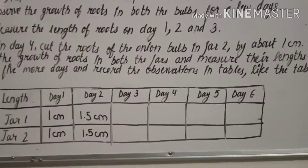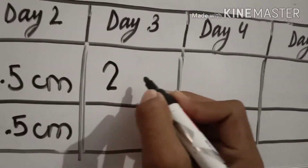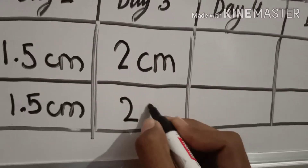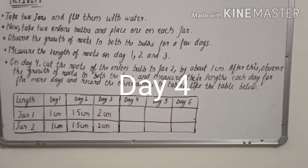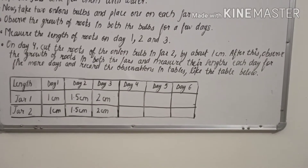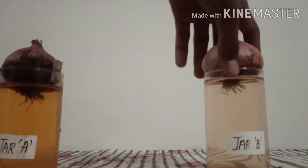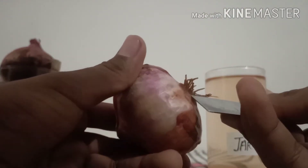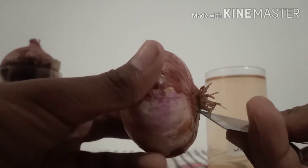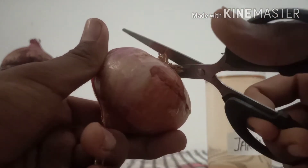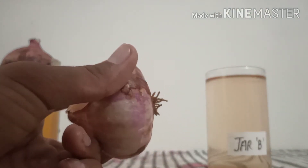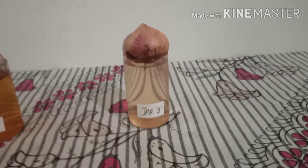Hello everyone, this is day four and we are going to do the last step of this activity. On day four, cut the roots of the onion bulb in jar two by about one centimeter. So now we are taking this onion and the scale and measuring it. As you can see, we have to cut it about one centimeter, so this is one centimeter and we have cut it.